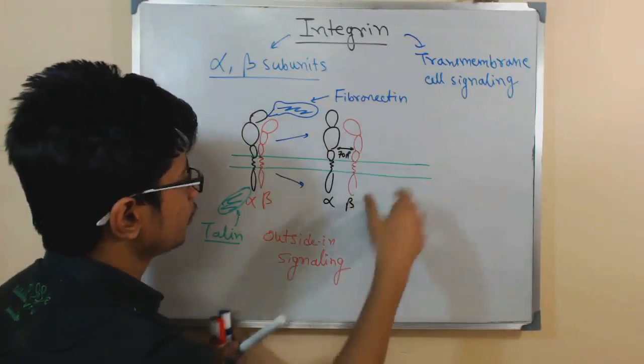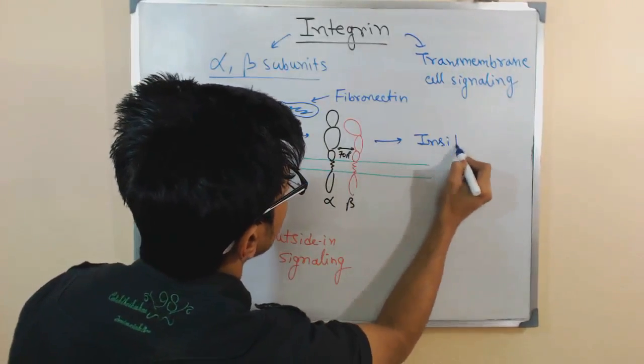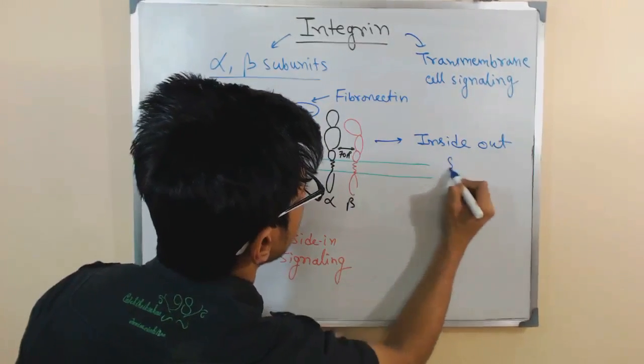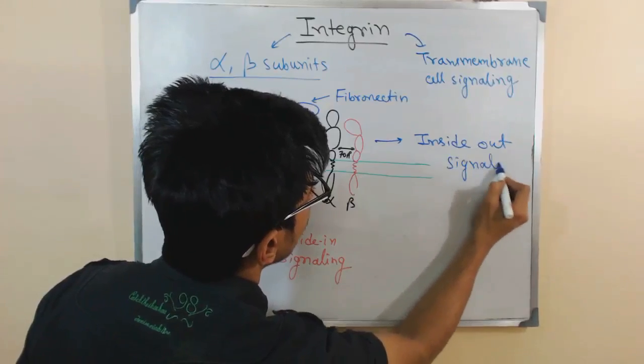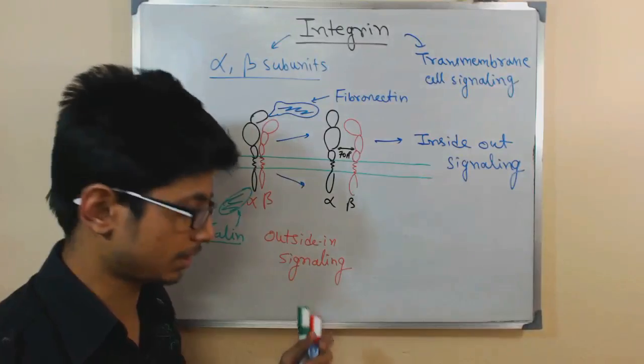And as a result, it will lead to certain signaling. And that signaling will be termed as inside-out signaling. In both the ways, those signaling actually help the cell to establish certain tasks.